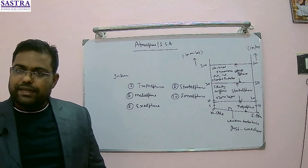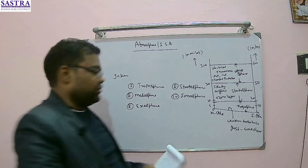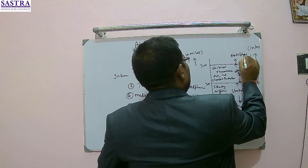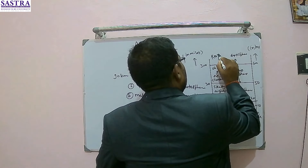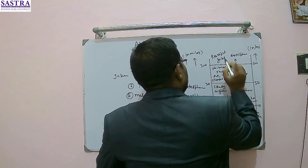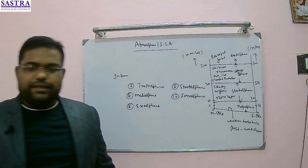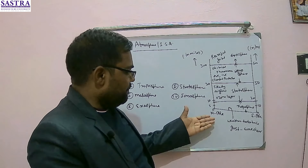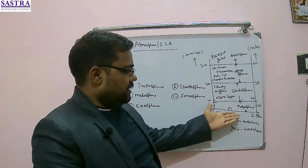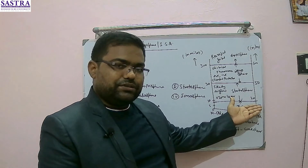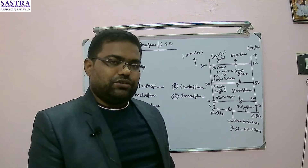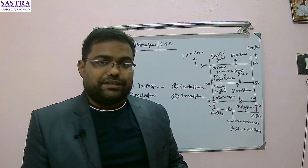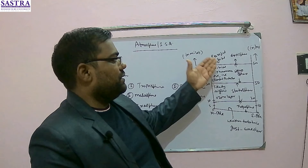Beyond 500 kilometers, side space exploration begins and you will get the exosphere. If you are crossing beyond that, you will get the exosphere. This is the zone basically where you will get rarefied gases. Beyond 500 kilometers, it will be rarefied gas. This is the relation of the atmosphere starting from sea level.